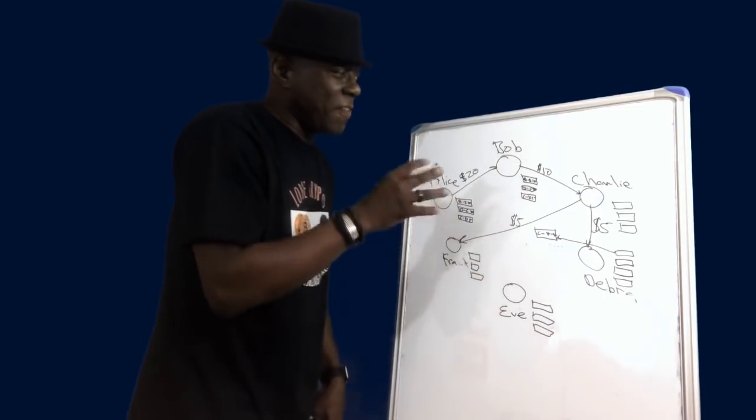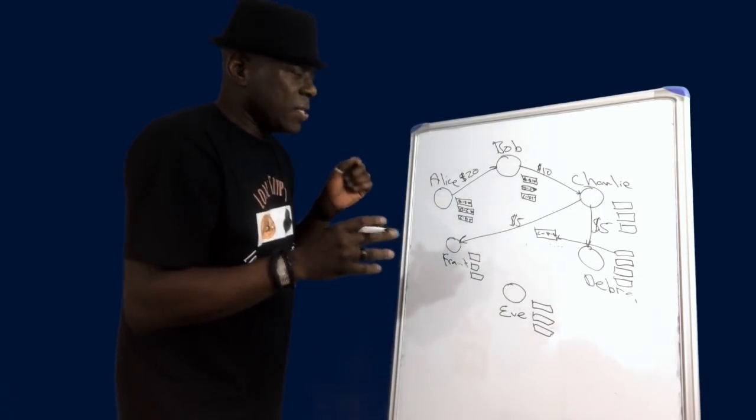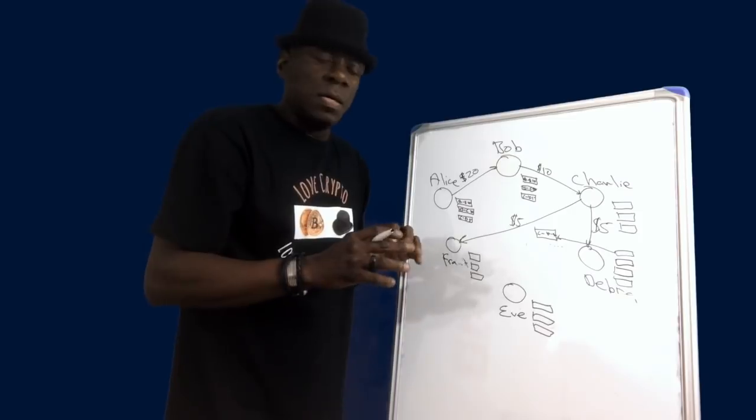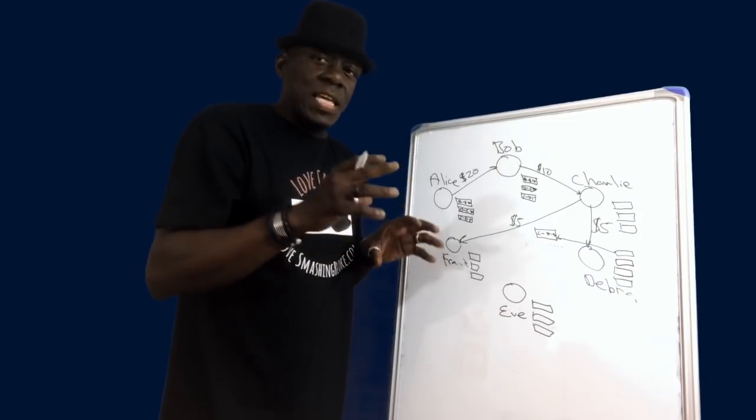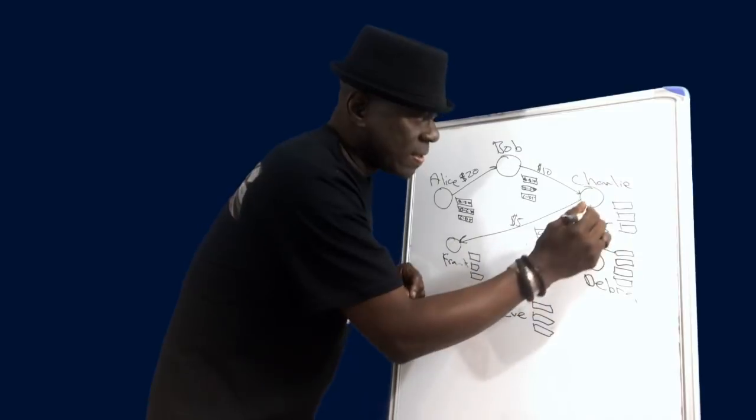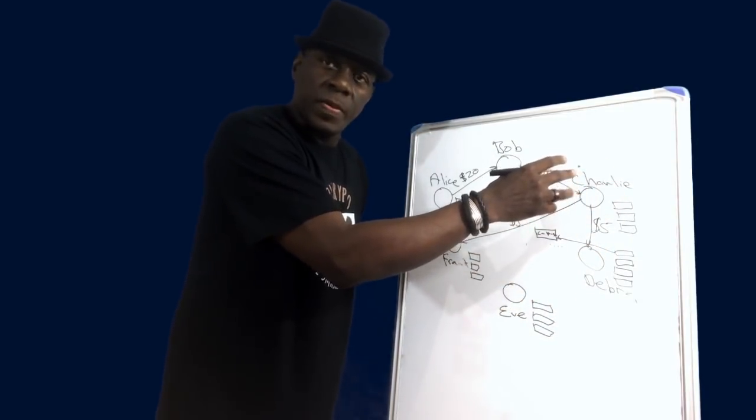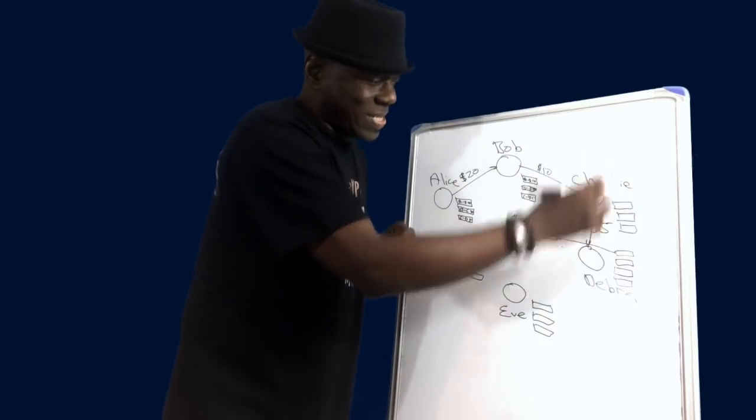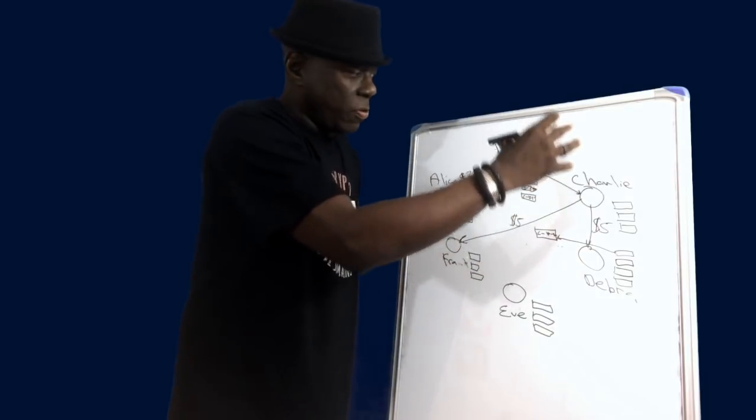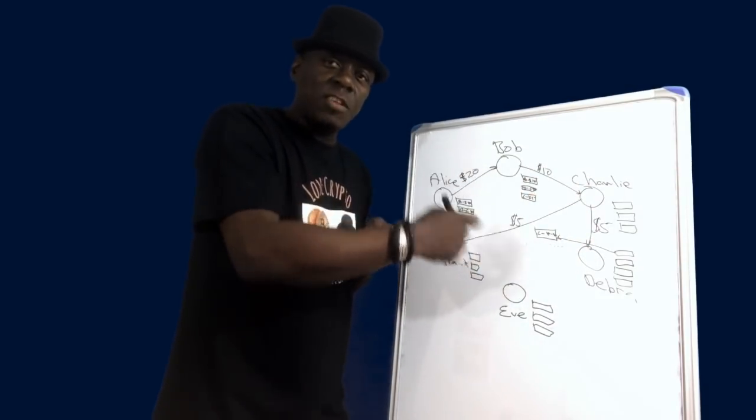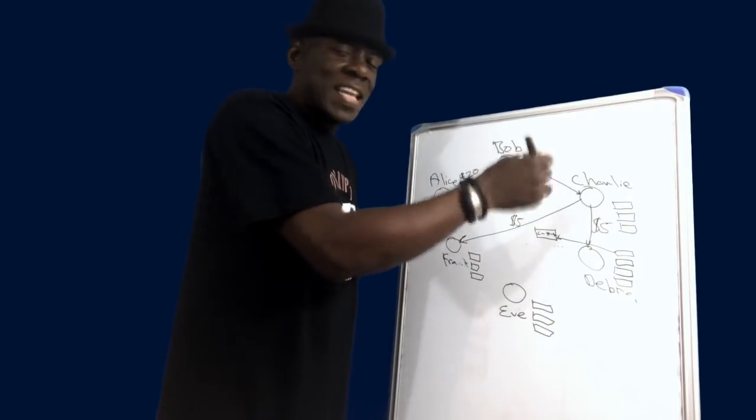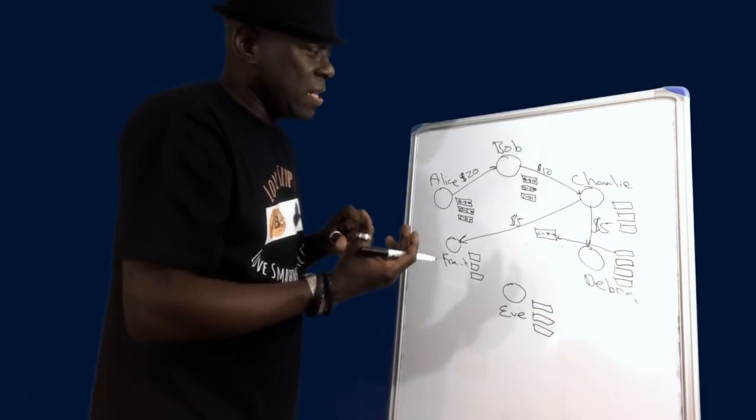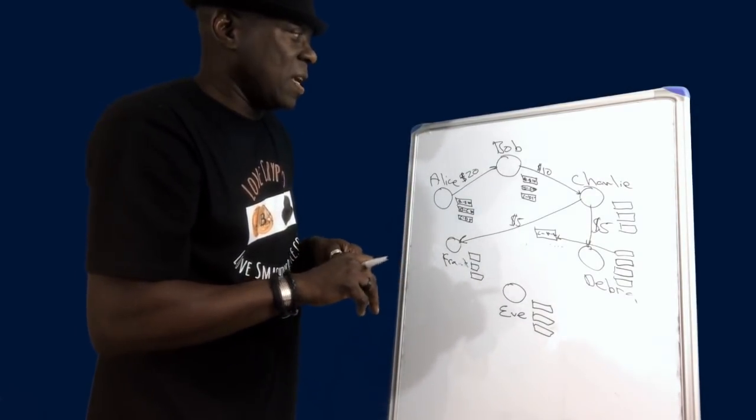With proof-of-stake there is no generating of random keys. We don't have miners in proof-of-stake, we have validators. And the way that proof-of-stake works is if Charlie wants to become a validator then Charlie will stake some of his coins. The more coins a node stakes, the higher the likelihood of being randomly chosen to validate transactions.